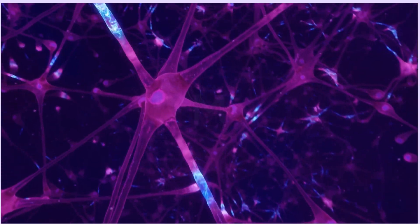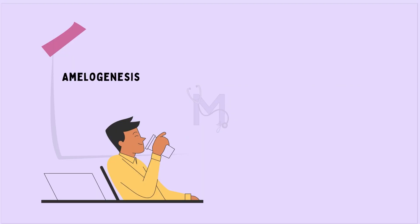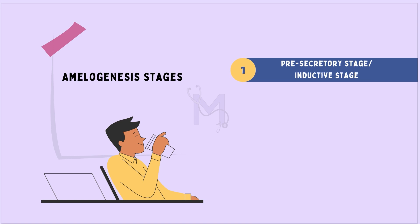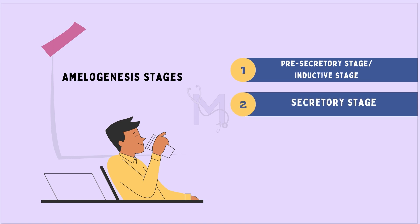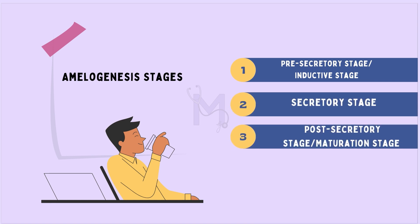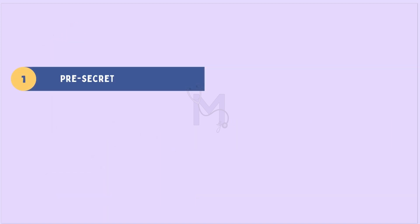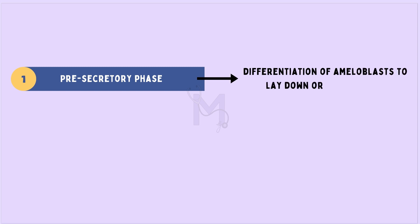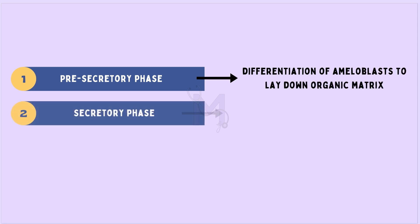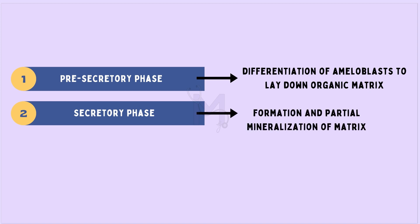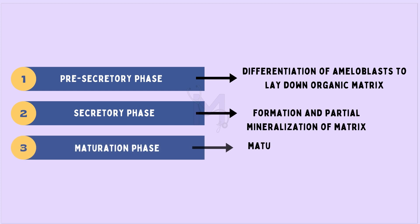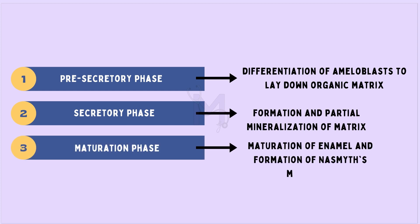Amelogenesis is considered to be divided into three main stages: the inductive or pre-secretory stage, the secretory stage, and the maturation stage or the post-secretory stage. The pre-secretory phase involves the differentiation of the ameloblasts to get prepared to lay down an organic matrix. The secretory phase includes the formation and the partial mineralization of this matrix, and finally the last stage is the maturation of enamel along with the formation of the Nasmyth membrane.